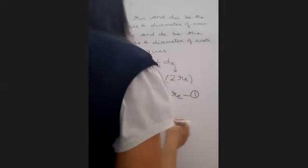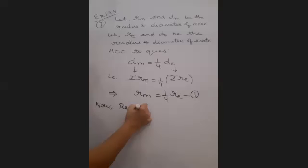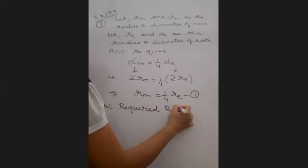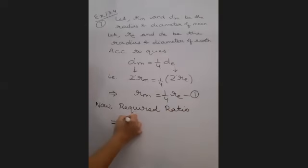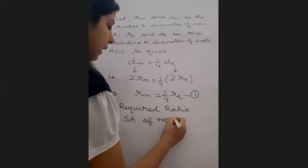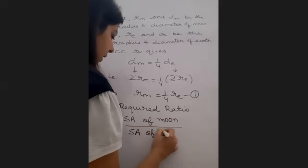Now we shall use this to get the value. Now required ratio, this is equal to surface area of moon upon surface area of earth. In the question, first they have written moon. So I am taking moon in the numerator.